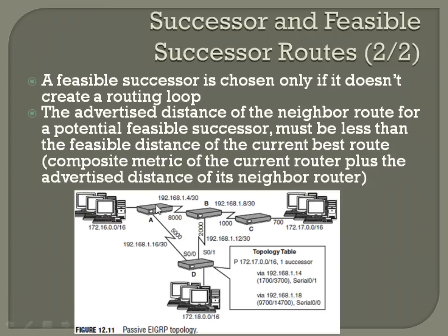You can see it's going through some really slow speed links — 5000 here, 8000 here — very high composite values. Part of this is the way the algorithm works, trying to prevent loops and keep the best path. This is only for successor and feasible successor. The feasible successor is stored in the topology table and is immediately — within about one second — thrown into the routing table if the successor fails. Since it's not considering this a feasible successor, it's not going to put that in the topology table.